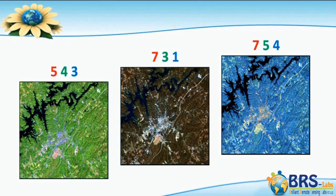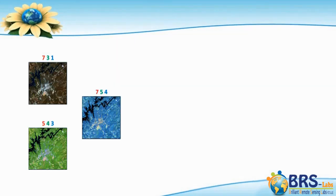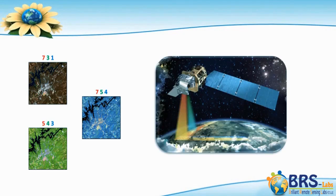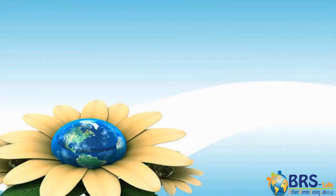The band combination 7, 3, and 1 shows the different types of rocks. Note that all the band combinations that display the things we mentioned are only for Landsat satellite images, like the image linear in the example. But if you are using an image from a different satellite, the band combinations that display these things may vary.